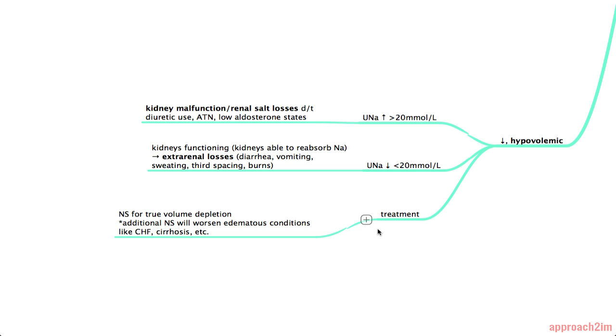For hypovolemic hyponatremia in general, the treatment is administration of IV normal saline. And here's just a note that giving IV saline in other cases which include edematous conditions or hypervolemia like CHF and cirrhosis, that will worsen these conditions. So you need to be careful on who you give IV normal saline to.